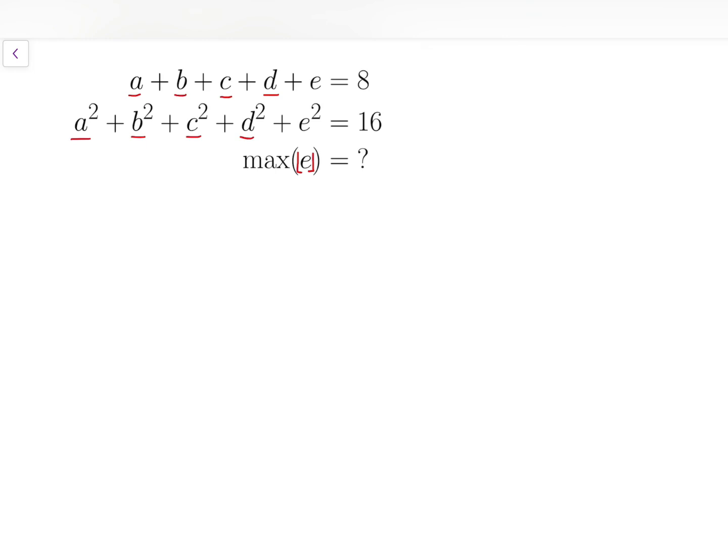And in that case, we will have 4A plus E equals 8, and 4A squared plus E squared equals 16. Now that's solvable, because we can just say that A equals 8 minus E over 4, and put that into the quadratic equation.